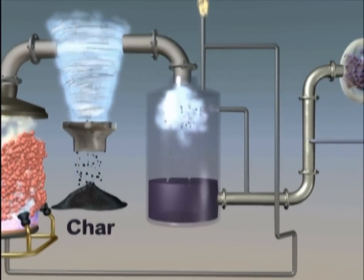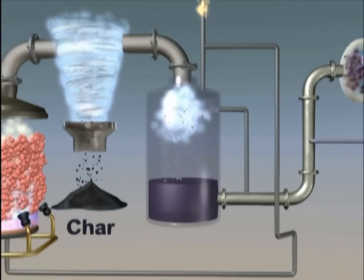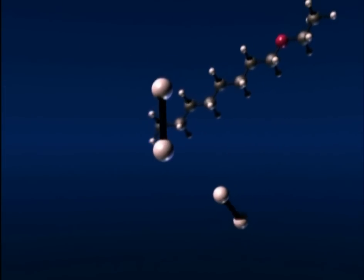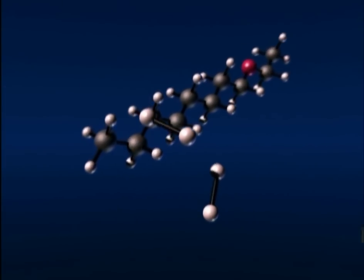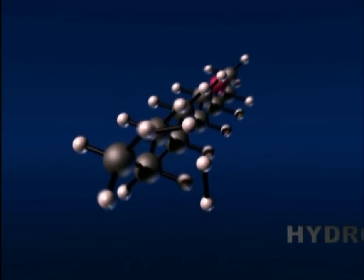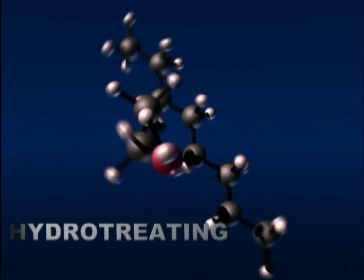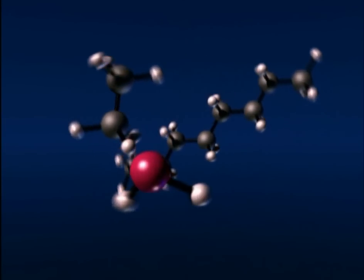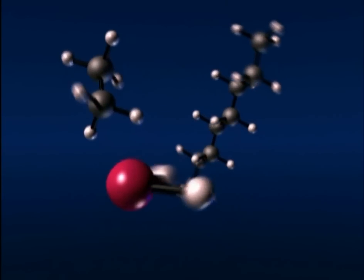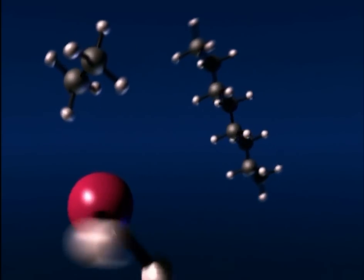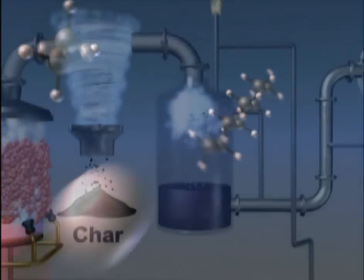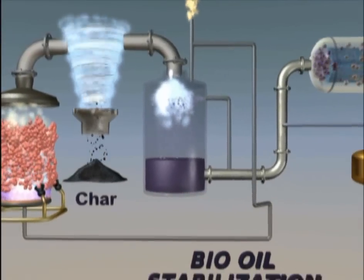Stabilization typically involves mild hydro-treating, a process that uses hydrogen to remove contaminants such as sulfur, nitrogen, or in the case of bio-oils, oxygen. Hydro-treating occurs with high hydrogen pressures in the presence of catalysts. Oxygen is eliminated mostly as water along with some carbon dioxide. Other processes to remove oxygen are also being examined.